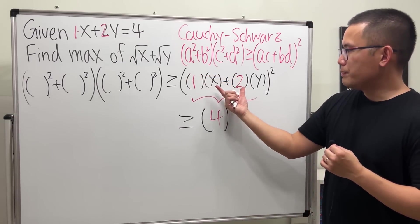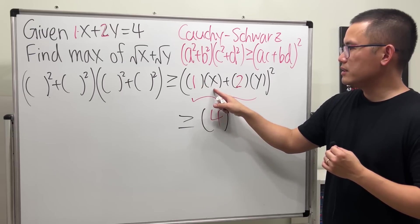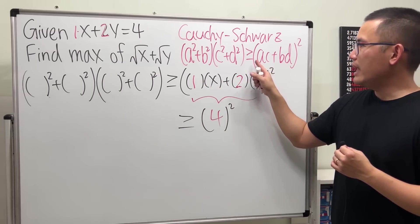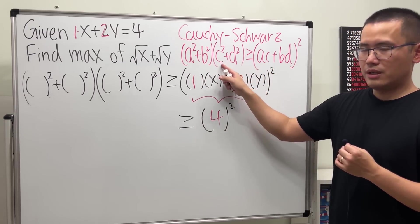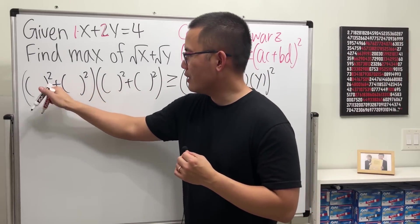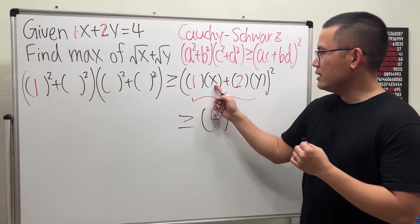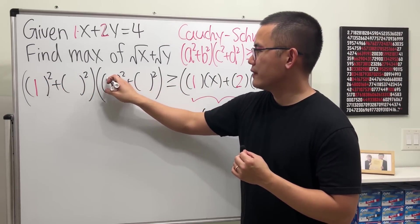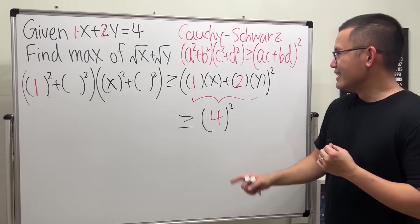Now, do it backwards. When we have 1x here, this is like a times c. So, the a will go here, c will go here. So, the 1 will go here. And the c, the x, will go here.